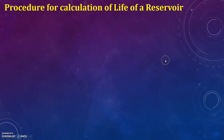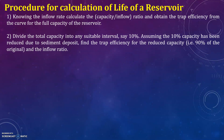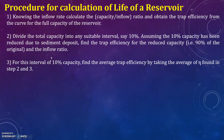To calculate the life of a reservoir: first, knowing the inflow rate, calculate the capacity-to-inflow ratio and obtain the trap efficiency from the curve for the full capacity of the reservoir. Next, divide the total capacity into suitable intervals, say 10 percent. Assuming 10 percent capacity has been reduced due to sediment deposit, find the trap efficiency for the reduced capacity (90 percent of the original) and the inflow ratio. Then find the average trap efficiency by taking the average of trap efficiencies found in steps 2 and 3.